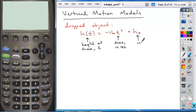And h(0) is the height at time 0, so that's called the initial height. And that's going to be in feet. And so time is in seconds, height is in feet. And so we talked about this in dropped objects.